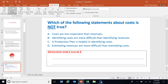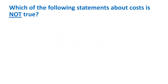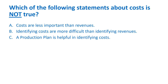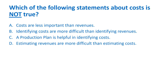Let's take the first question on cost identification. Which of the following statements about cost is not true? A) Costs are less important than revenues. B) Identifying costs is more difficult than identifying revenues. C) A production plan is helpful in identifying costs. D) Estimating revenues is more difficult than estimating costs. Post the video and think about your answer.